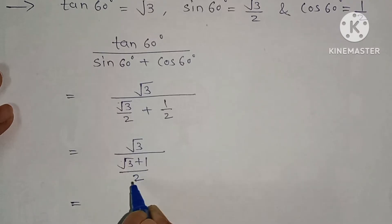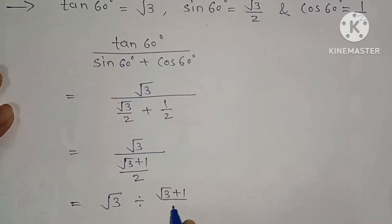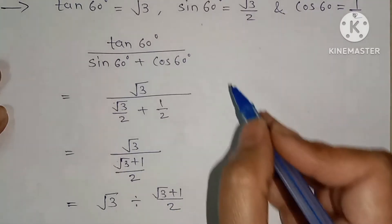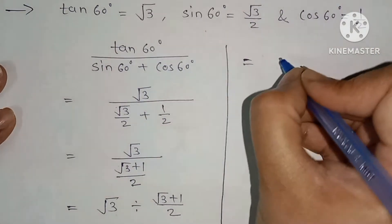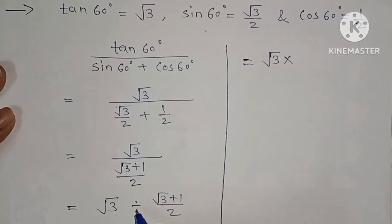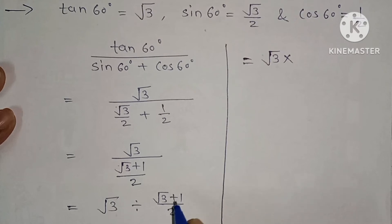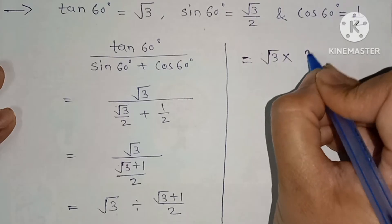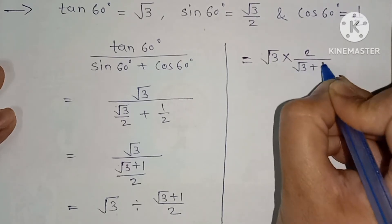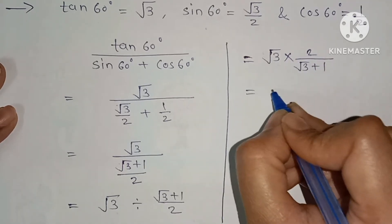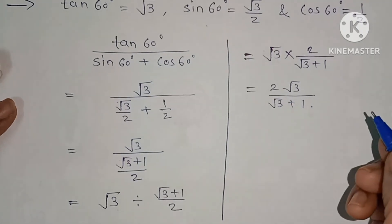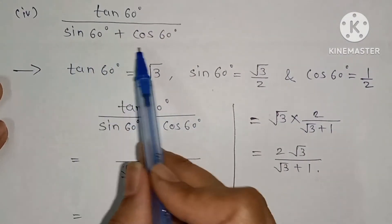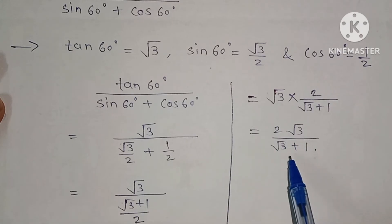Root 3 divided by (root 3 plus 1) upon 2. Taking the reciprocal: root 3 multiplied by 2 upon (root 3 plus 1). This gives 2 root 3 upon (root 3 plus 1). Therefore tan 60 upon (sin 60 plus cos 60) equals 2 root 3 upon (root 3 plus 1).